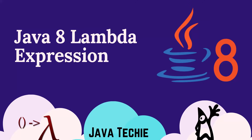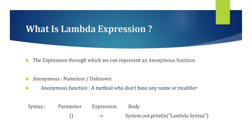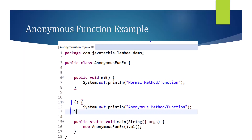What is a lambda expression? It is an expression through which we can represent an anonymous function. Anonymous means nameless or unknown — a function or method that doesn't have any name or prefix is called an anonymous function. Using a lambda expression, we can convert an abstract method into an anonymous function.